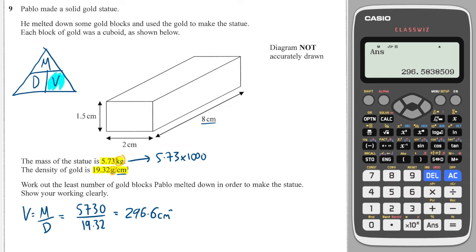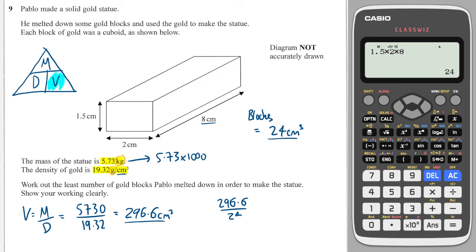Now let's figure out the volume each gold block provides. It's 1.5 times 2 times 8, so each block gives 24 centimeters cubed. To find how many blocks are needed, I divide 296.6 by 24, which gives 12.4. Because you can only use whole blocks and the question asks for the least number needed, the answer is 13 blocks in total.